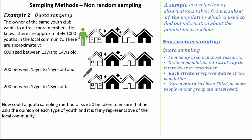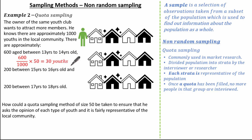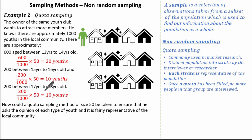He needs to take a representative sample of the population. We use the same formula as for stratified sampling. Working out each group: 600 divided by 1000 times 50 means we sample 30 youths aged 13 to 14. Next, 200 divided by 1000 times 50 means we sample 10 youths aged 15 to 16. Finally, 200 divided by 1000 times 50 means we sample 10 youths aged 17 to 18. So now we know how many of each strata we need, which is representative of the population.